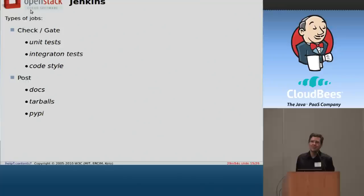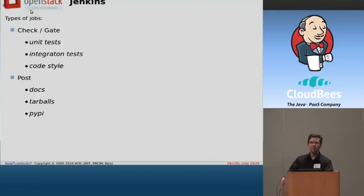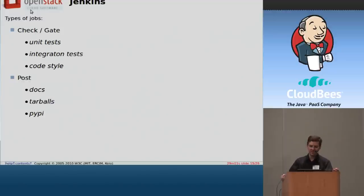Here's how we use Jenkins. We have a couple different classes of jobs: check and gate jobs, which tend to be the exact same jobs but run in different contexts. Check jobs are like unit tests, integration tests, and code style tests that run when you upload a patch — it's just informative, you can override it in code review. When we run things as part of the gate, they matter — you can't override them, and they're required to pass before your change merges into the repository. Then there are post-merge jobs: documentation, tarballs, uploading things to PyPI — that all just happens after something's been merged.